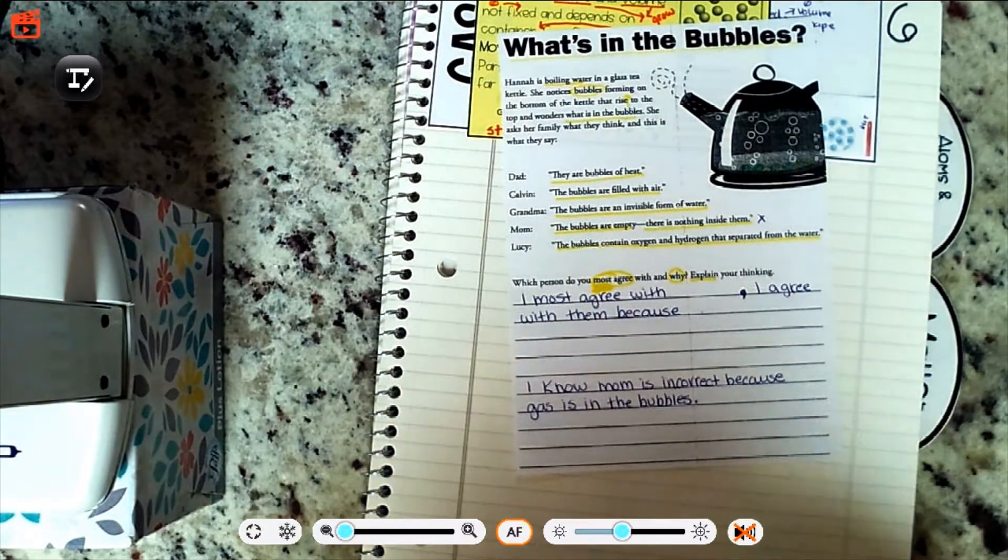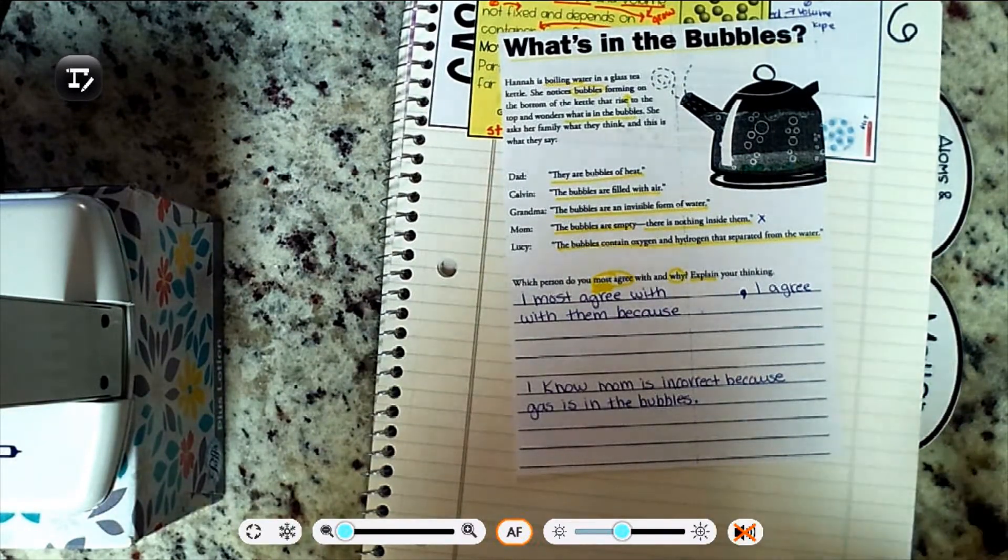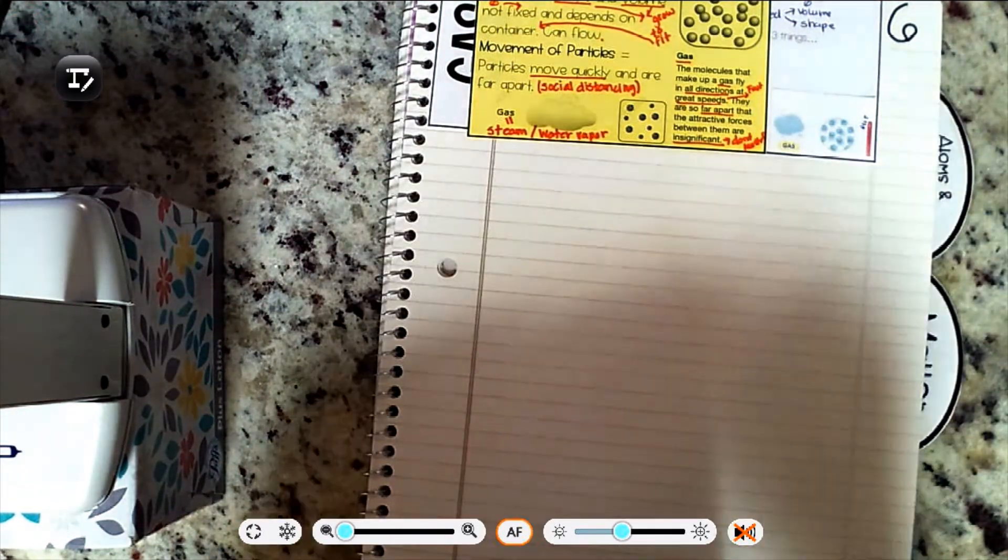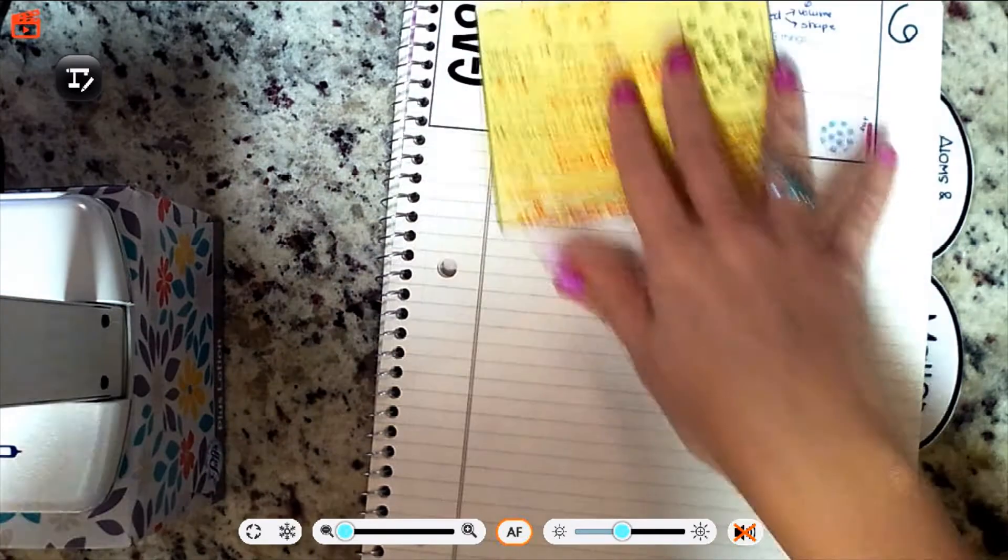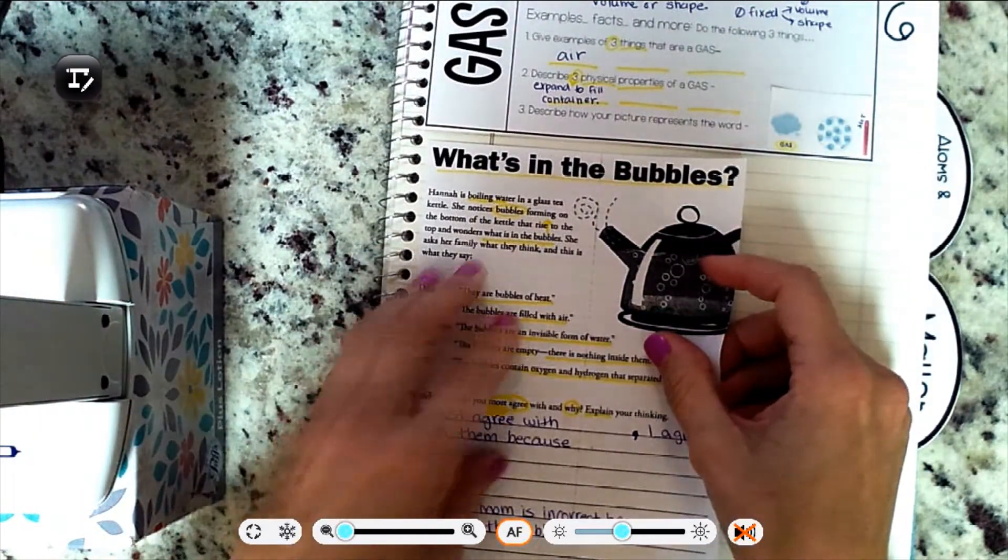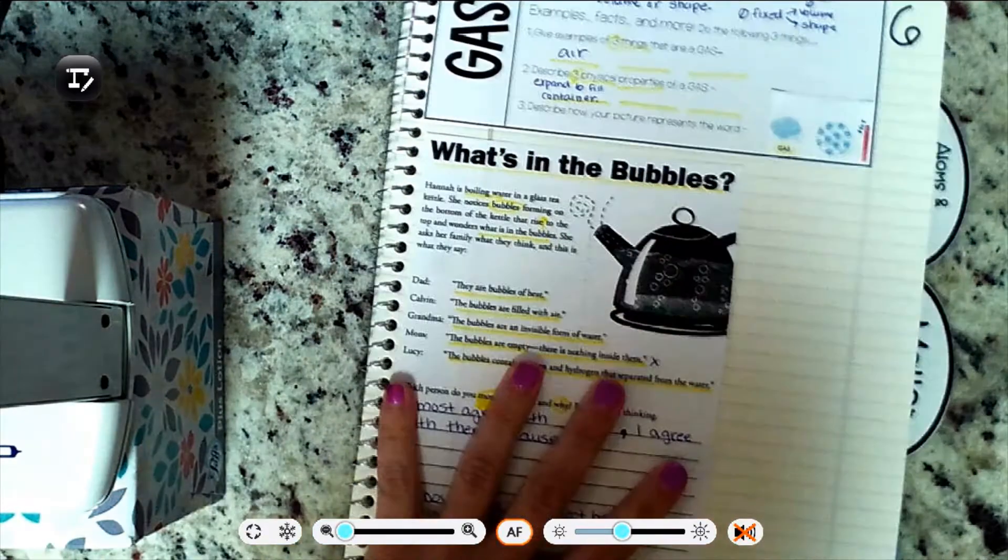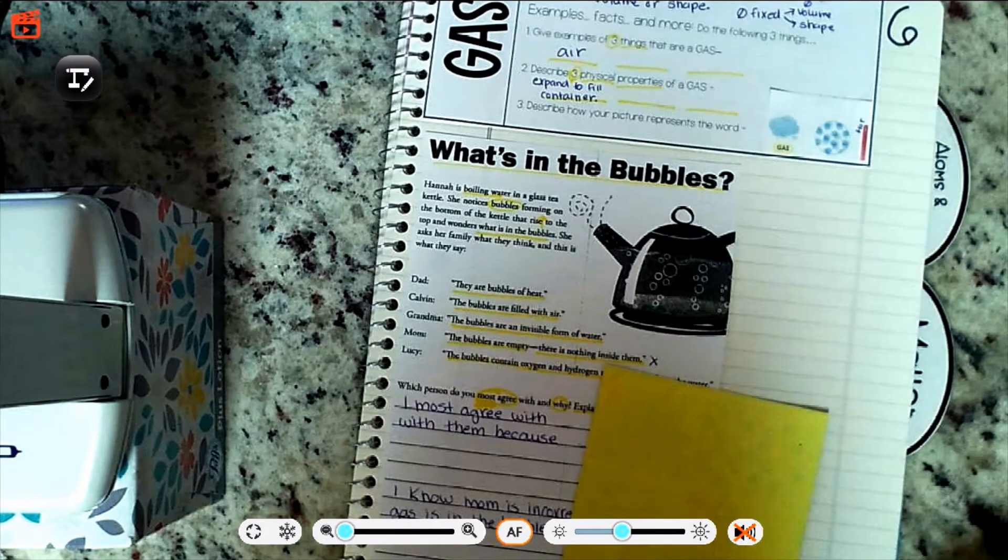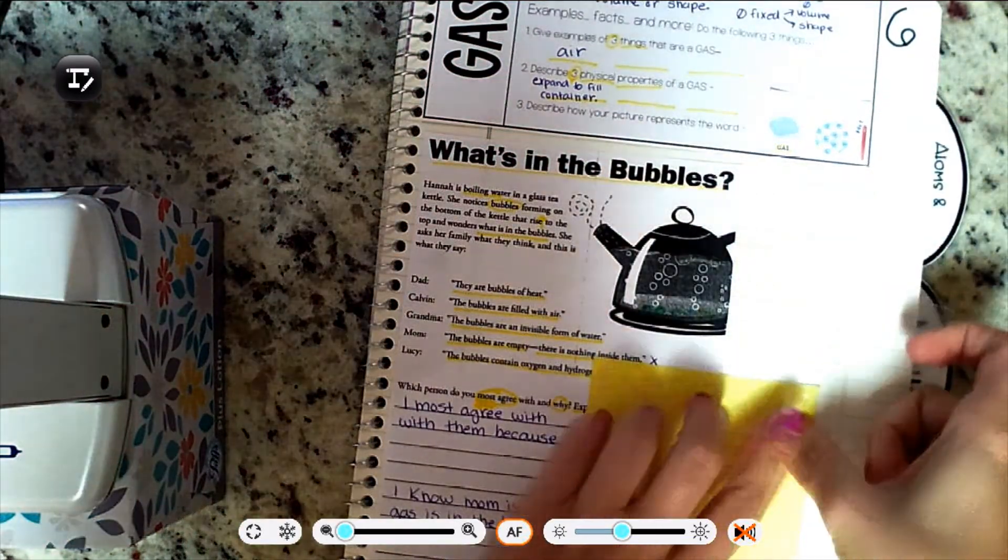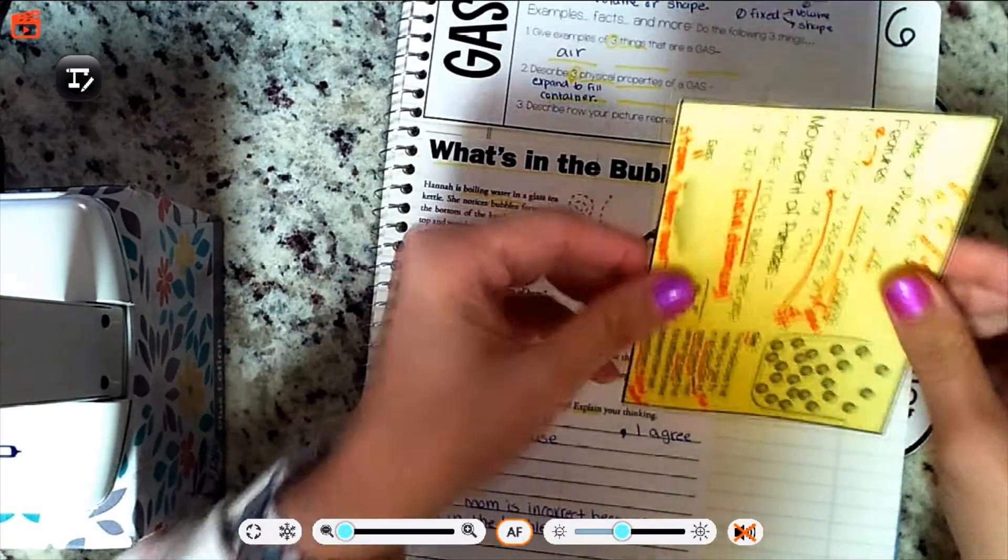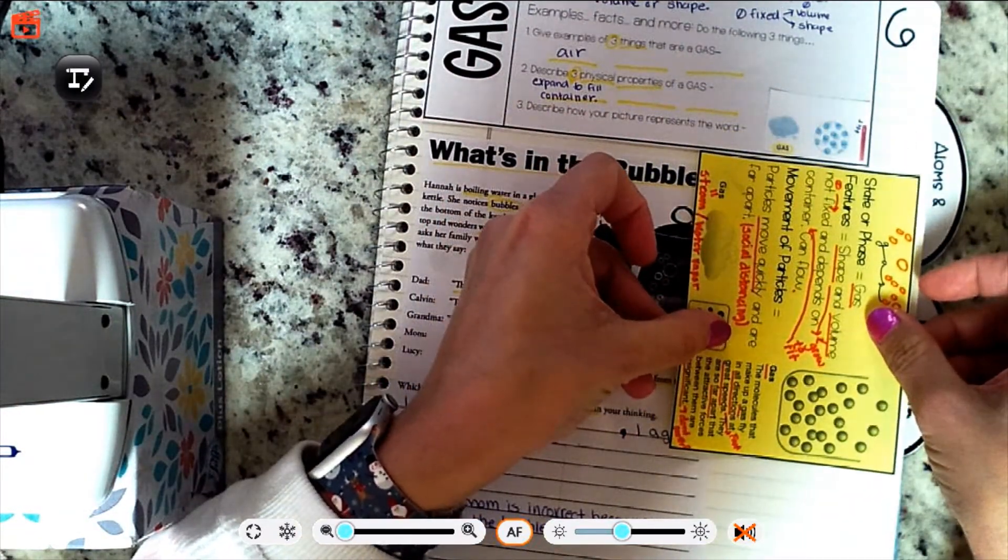And then we're going to get this stuff attached in. First you're going to take your what is bubbles and you're going to put it on the left hand side underneath your word gas. Make sure you get it all the way over to the left.